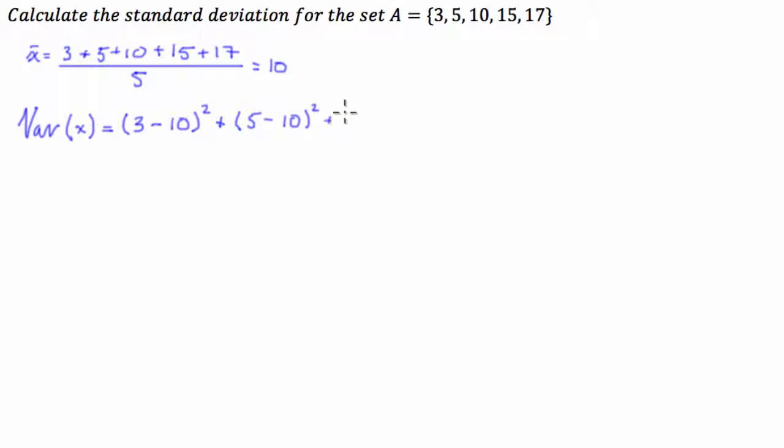Then we add the next number, 10, subtract the mean, so this is going to be 0 because that number is the mean. Adding 15, subtract the mean, add 17, subtract the mean.